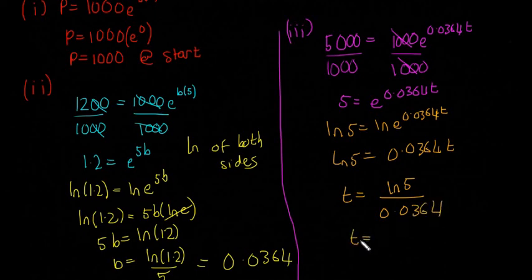So that means our answer for T is LN of 5 divided by 0.0364. That means T is equal to 44.1 minutes. So again, that's all just calculator work. You can't do that in your head. 44.1 minutes.